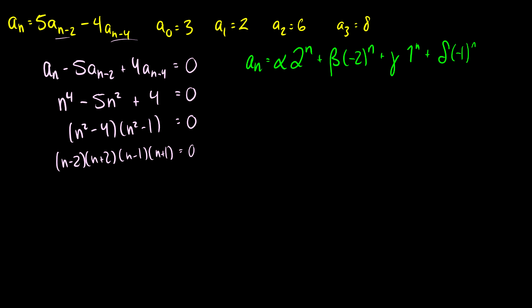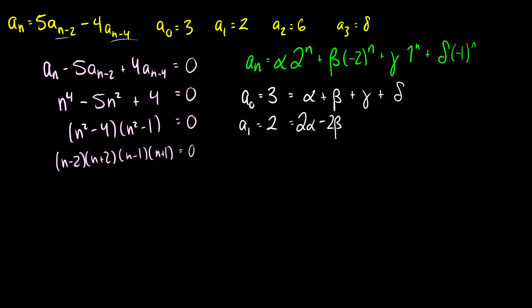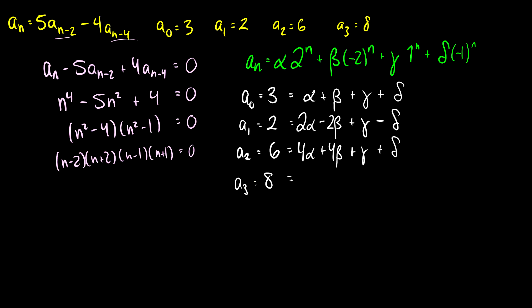There's a lot we need to solve for here. We can plug in a_0, a_1, a_2, and a_3 to get our system. a_0 = 3 gives: alpha + beta + gamma + delta = 3. a_1 = 2 gives: 2·alpha minus 2·beta plus gamma minus delta = 2. a_2 = 6 gives: 4·alpha + 4·beta + gamma + delta = 6. And a_3 = 8 gives: 8·alpha minus 8·beta + gamma minus delta = 8.